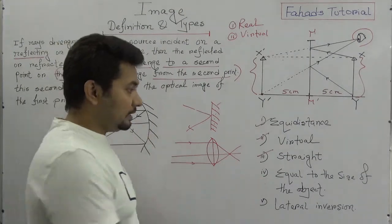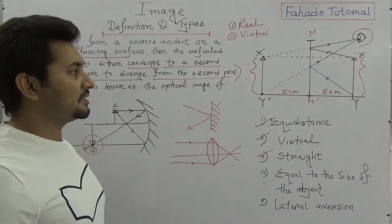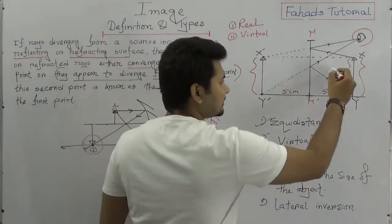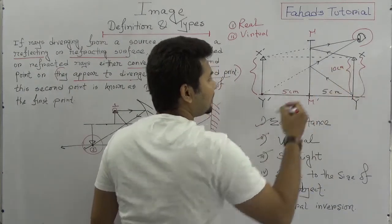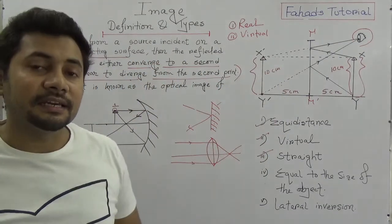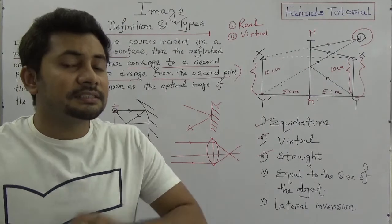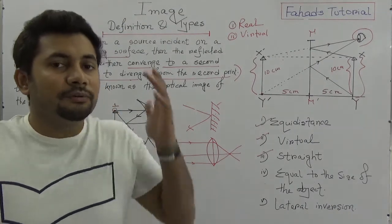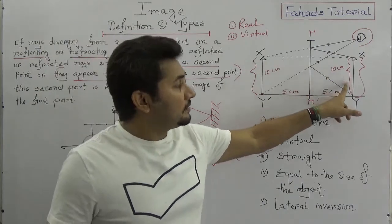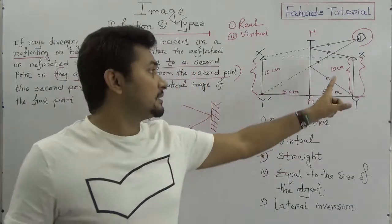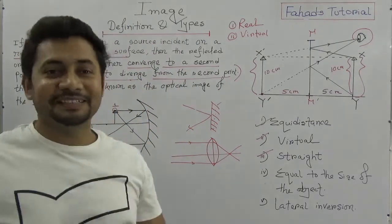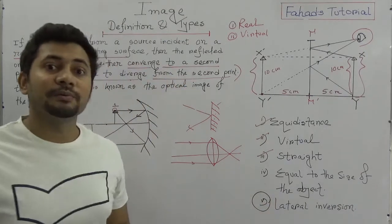The third characteristic: the size of the image equals the size of the object. If the height of the object is 10 cm, then the height of the image is also 10 cm. The fourth and most interesting characteristic is that lateral inversion will take place. What is lateral inversion?